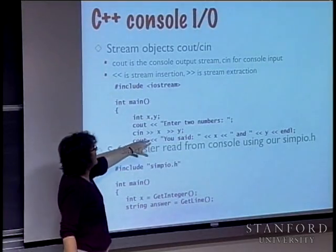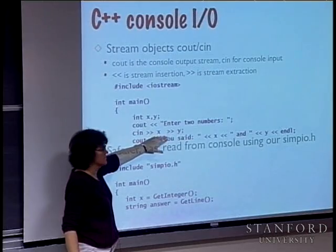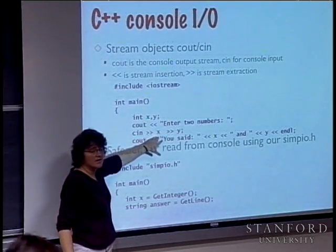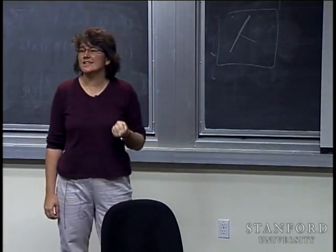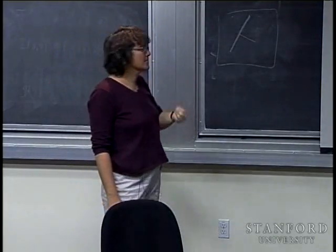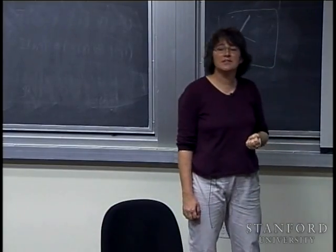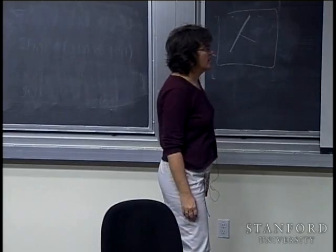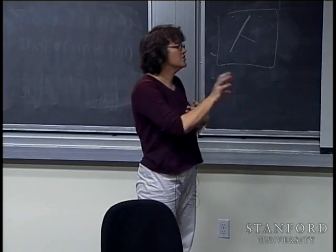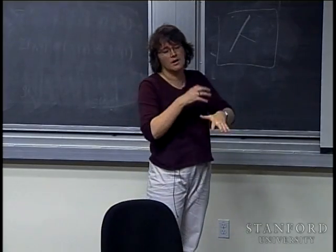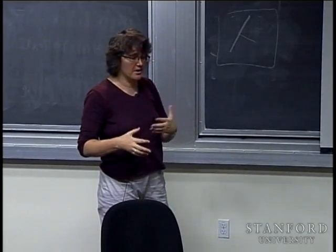If the stream runs into something that's not an integer — a character, punctuation, or something like 39.5 — it goes into a fail state. It says: you told me to expect an integer, what I read wasn't an integer, I don't know how to make heads or tails of this. At that point you need to check the fail state, clear it, decide what to do, and kind of restart and pick up where you left off.